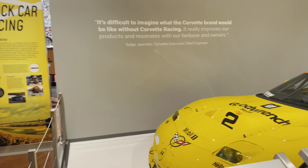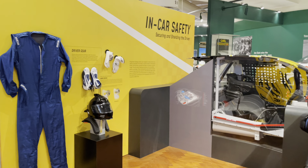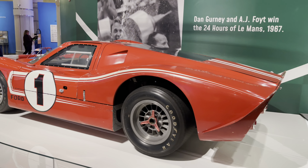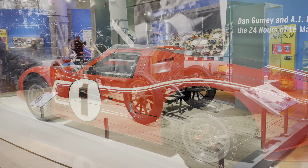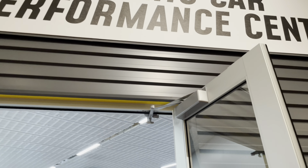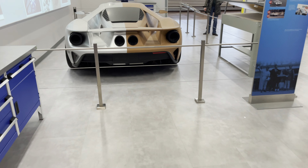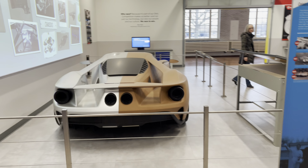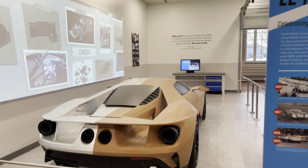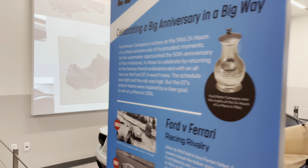The oldest car on display here is the 1865 Roper Steam Carriage. Henry Ford's first engine was actually built in a kitchen sink, which I thought was really interesting. They also have different cars and community sports cars that Ford used for racing.